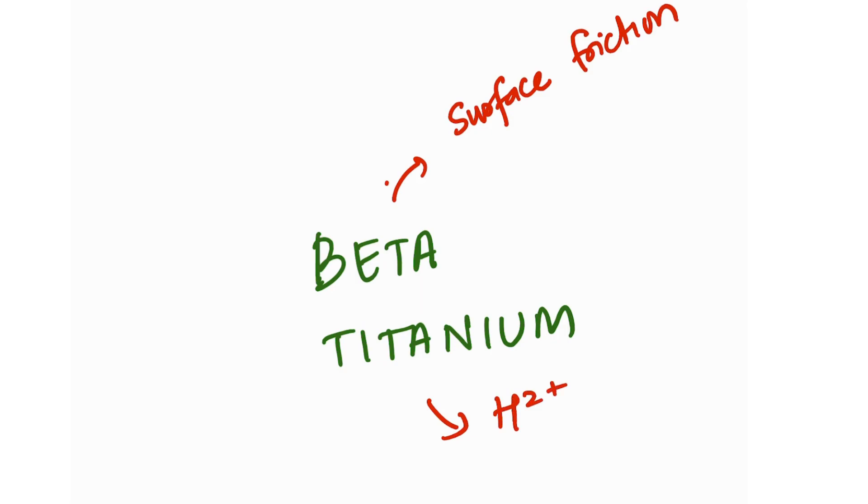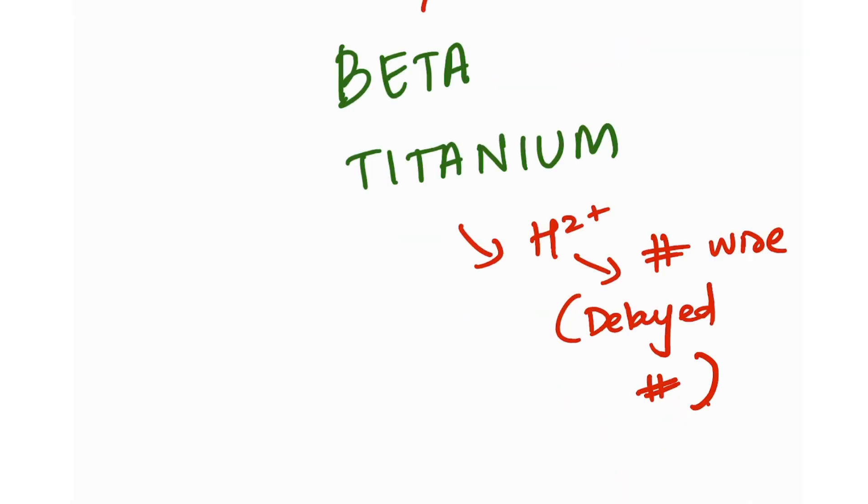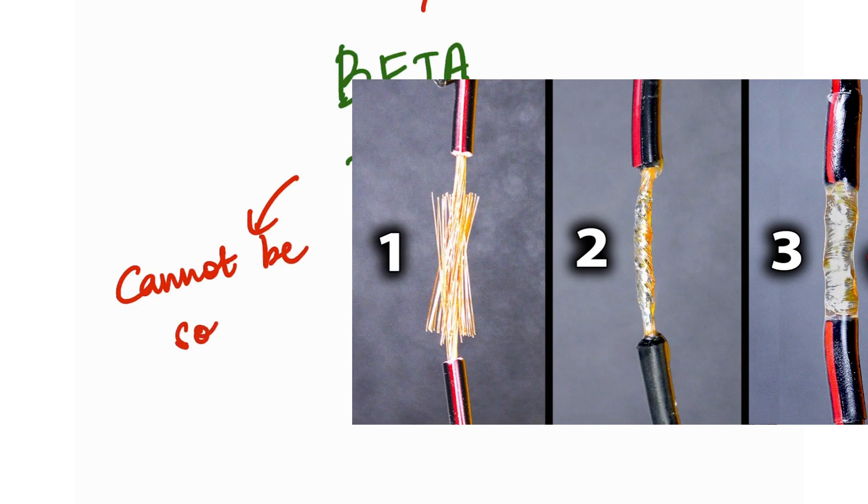Hydrogen absorption in the oral environment can lead to embrittlement or fracture of the wire. This type of fracture is called delayed fracture. Beta titanium cannot be soldered.